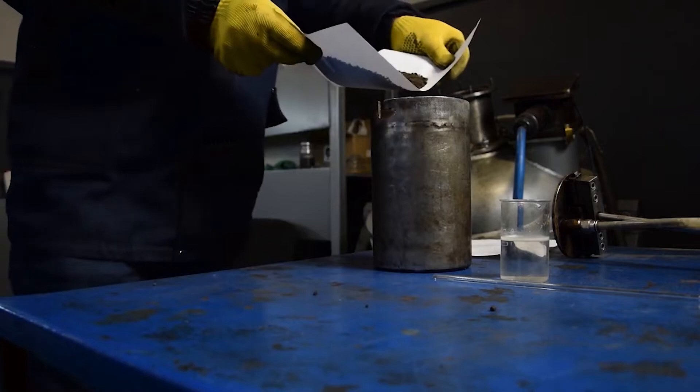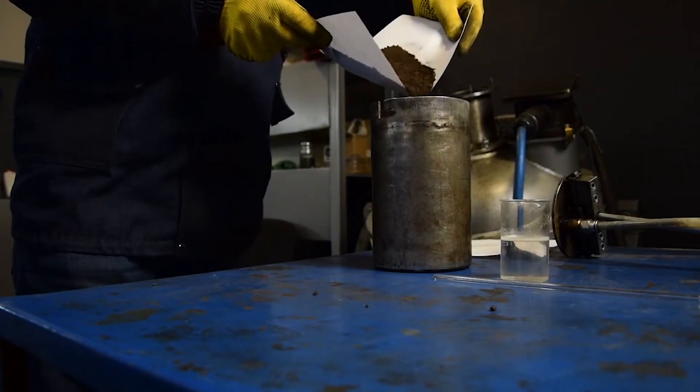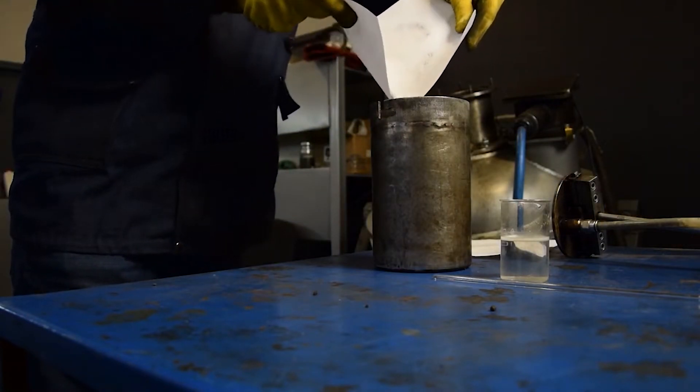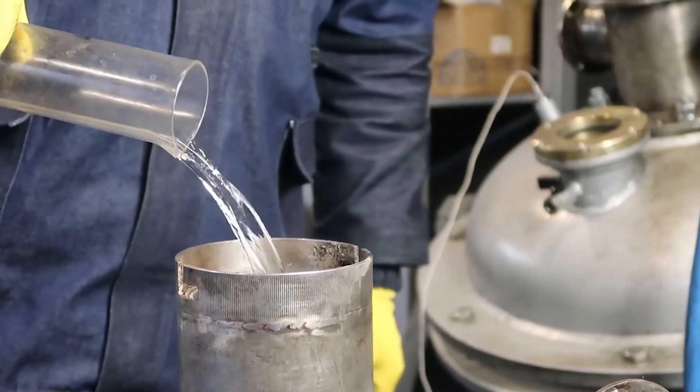We filled the reaction container of 1.5 liter volume with 250 grams of peat and 500 milliliters of water, having previously dissolved 5 grams of alkali in water.